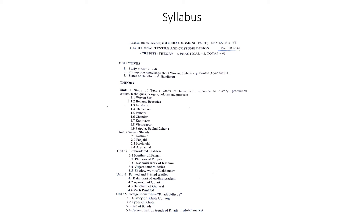Unit 3 - આ Rustic, environment-based design અને women's agency સાથે જોડાયેલ Embroidery Textiles. આ એ પ્રકારના વસ્ત્ર છે.